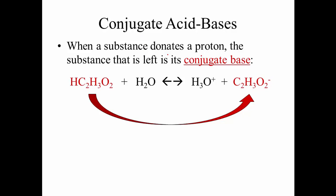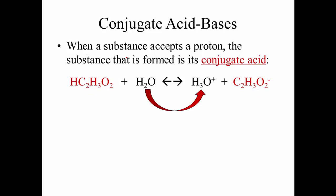When a substance donates a proton, the substance that is left is its conjugate base. Acetic acid forms the acetate ion, which is the conjugate base of acetic acid. When a substance accepts a proton — in this case getting it from the acetic acid — the species that it forms is its conjugate acid. Acids and bases have to be together on one side of the equation, and the conjugate acids and bases are formed on the other side.